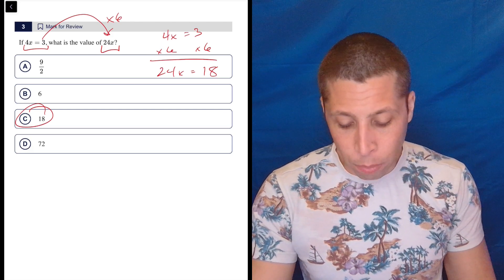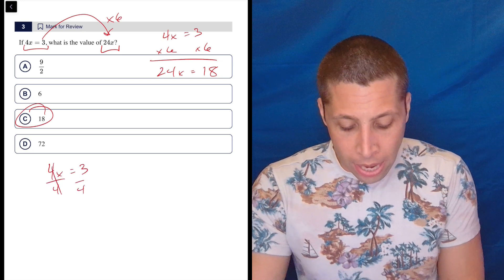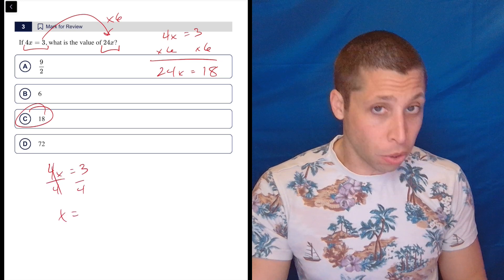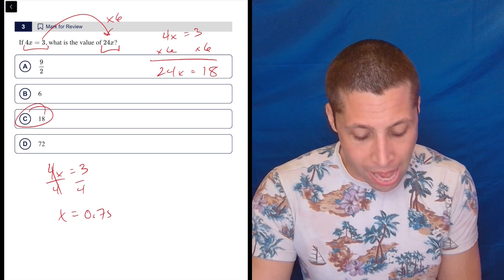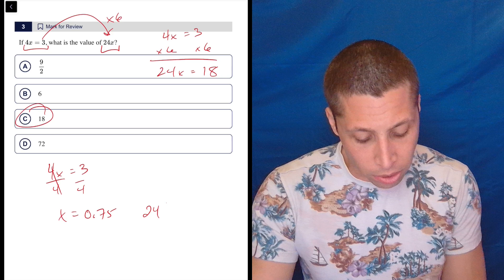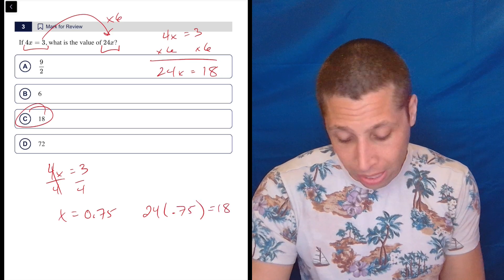Now, if you want to do it the long way, we could just take our 4x equals 3 and divide by 4. As far as fractions go, it's not the worst one. It's three-fourths. You could also put that into your calculator and get 0.75. And then what is 24 times 0.75? Again, calculator will save you. It'll give us 18. So that's fine too.